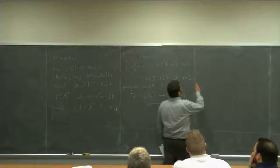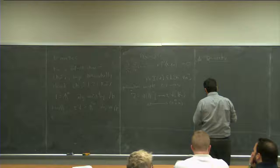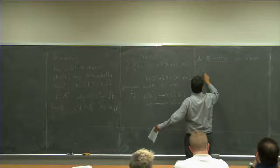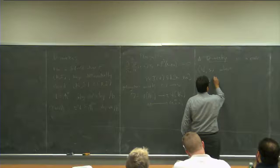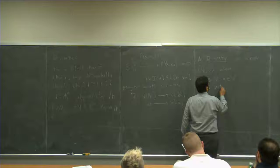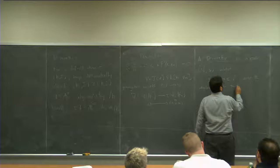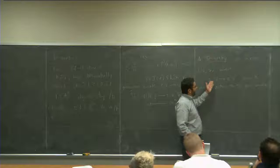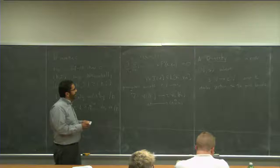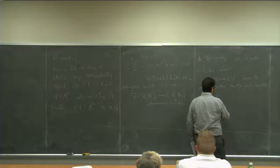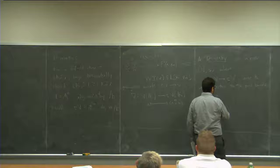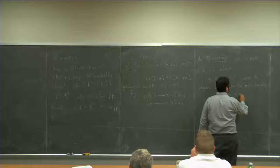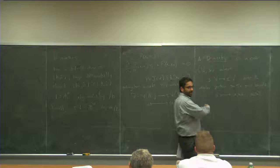A D-variety is a pair: an affine algebraic variety V together with an algebraic section S — a regular section over k — to the prolongation. The data is entirely algebraic: an algebraic variety with an algebraic section to the prolongation, which is some other algebraic variety. The derivation just comes up with the equations for the prolongation. In coordinates, the section takes a point a to (a, S_1(a), ..., S_n(a)), where S_1 through S_n are the polynomials giving the section.